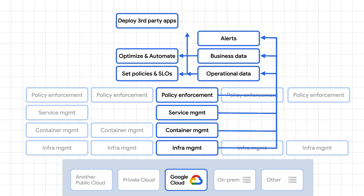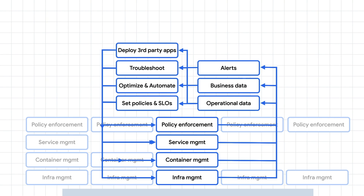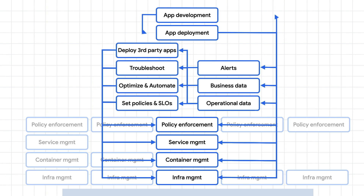You might use business data to do all those things and to deploy third-party apps. Then to actually enact the changes you decided on, you need to act on different specific parts of the system — digging into each tool for policy enforcement, securing services, orchestrating containers, and managing infrastructure. And don't forget, all of this work is in addition to what it takes to develop and deploy your own apps.